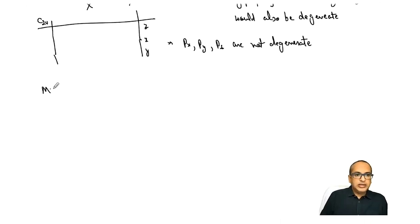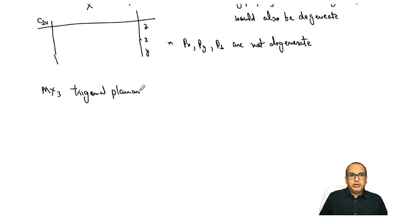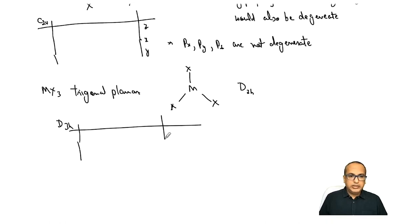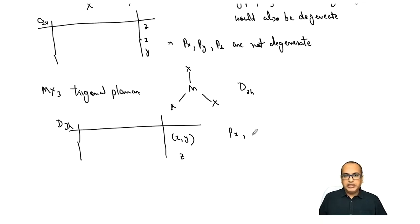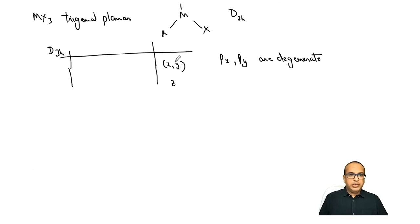For MX3 trigonal planar (like BF3), all atoms are in one plane and the point group is D3h. In the D3h character table, x and y appear together while z is in a separate row. This means only px and py are degenerate; pz is separated from px and py. Just by looking at symmetry we are making a statement about energy.